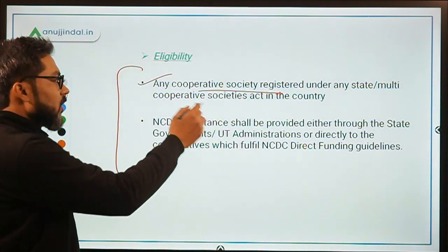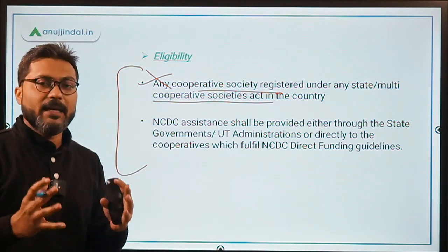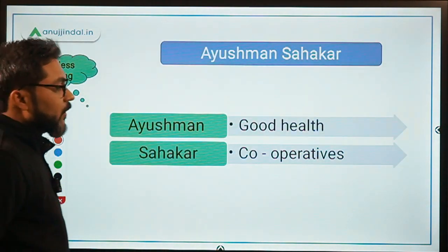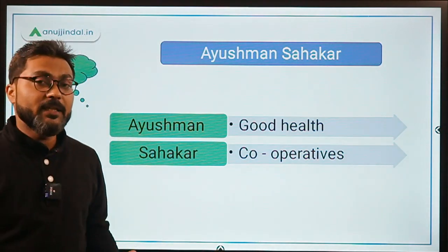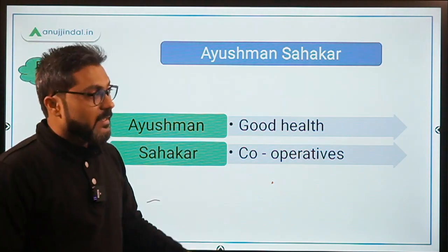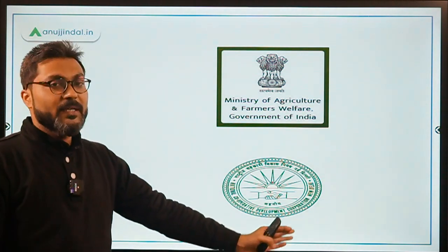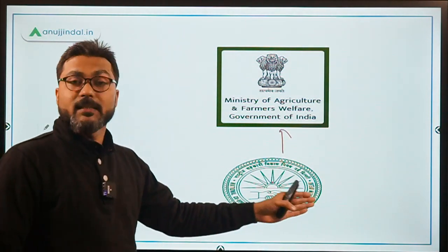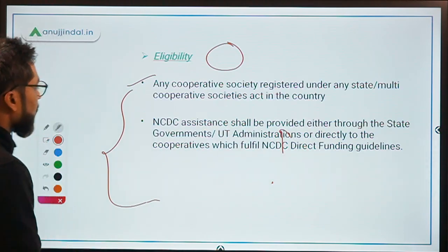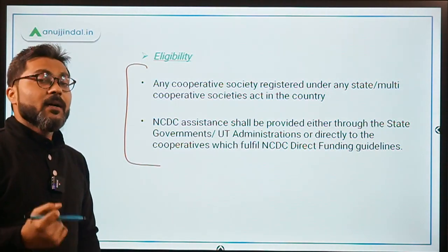Regarding eligibility, any cooperative society registered under any state or multi-state cooperative society act in the country is eligible to get benefits under the scheme. To summarize the key points: objective is to promote holistic healthcare and achieve the targets of the National Digital Health Mission through cooperatives; ministry is Agriculture and Farmers Welfare; launch year is 2020; and all cooperative societies are eligible.